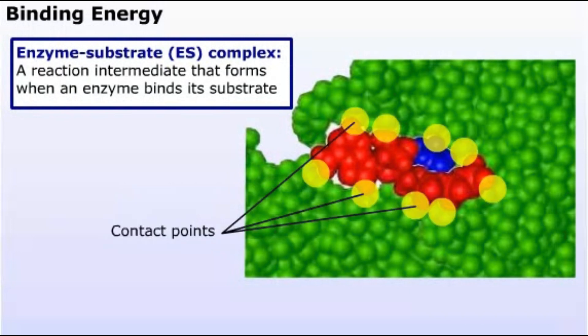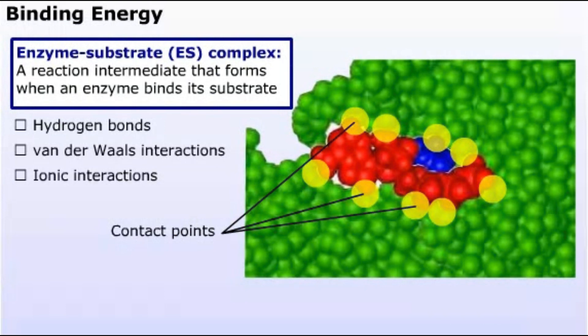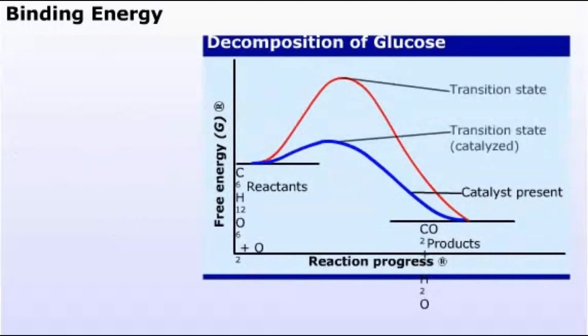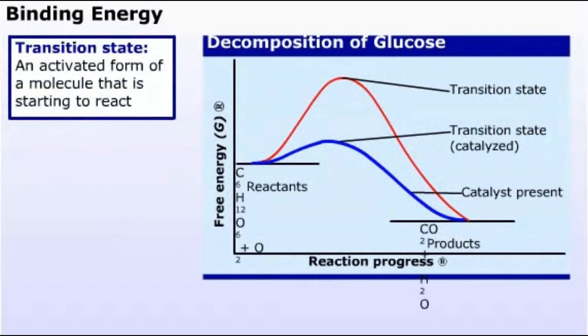The contact points or binding interactions between the enzyme and substrate result from hydrogen bonds, van der Waals interactions, and ionic interactions. More enzyme-substrate binding interactions form once the substrate has started to react. This occurs at the top of the hill and is called an activated complex, or transition state.